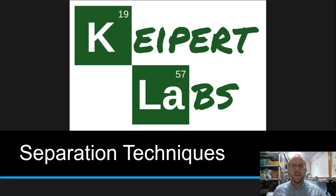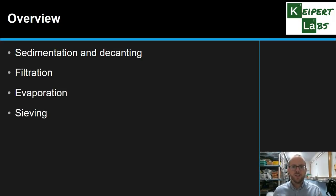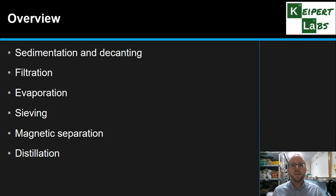Hi everyone, welcome to this episode of Kaipit Labs. In today's video we're going to be discussing separation techniques — the different techniques available to us to help separate mixtures. We're going to go through about half a dozen particular techniques that we commonly encounter in the lab. We'll be talking about sedimentation and decanting, filtration, evaporation, sieving, magnetic separation, and distillation. We'll talk through the types of mixtures they can separate, as well as the actual principle behind each one.